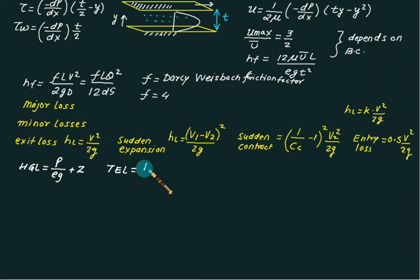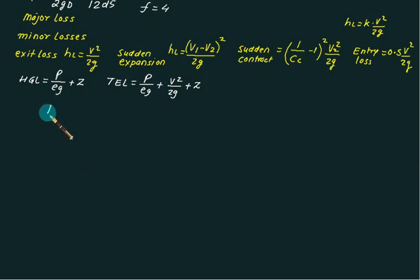Hydraulic grade line is p/(ρg) + z. Total energy line is the sum of all energy: p/(ρg) + v²/(2g) + z. Then we have normally two types of problems in the case of pipes: pipes in series and pipes in parallel.